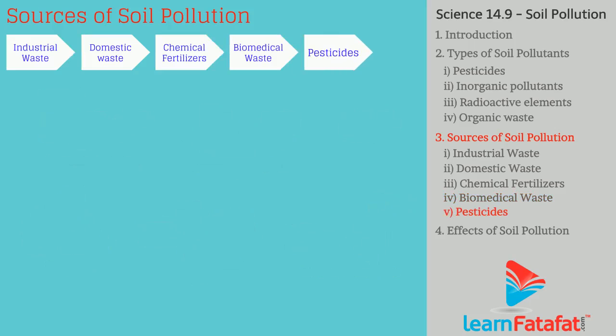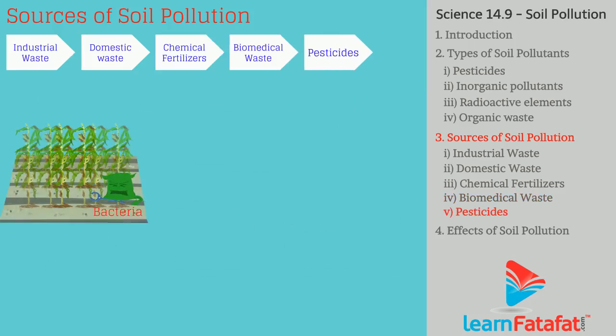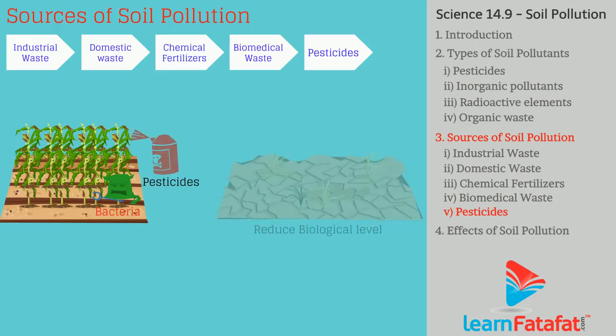Pesticides. The chemicals used to kill pests are called pesticides, usually applied on farms. They kill natural bacteria in the soil and reduce biological levels.